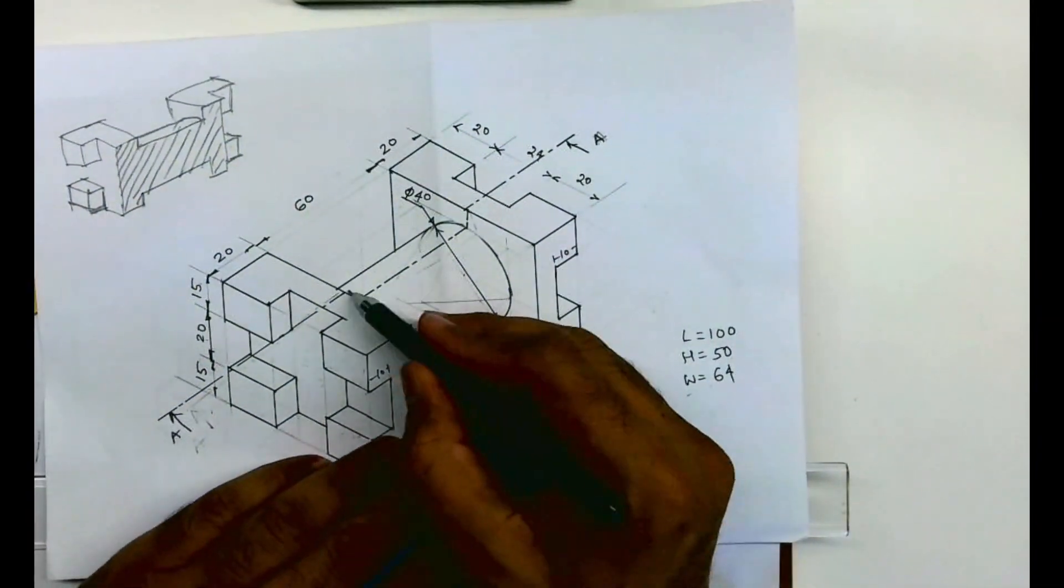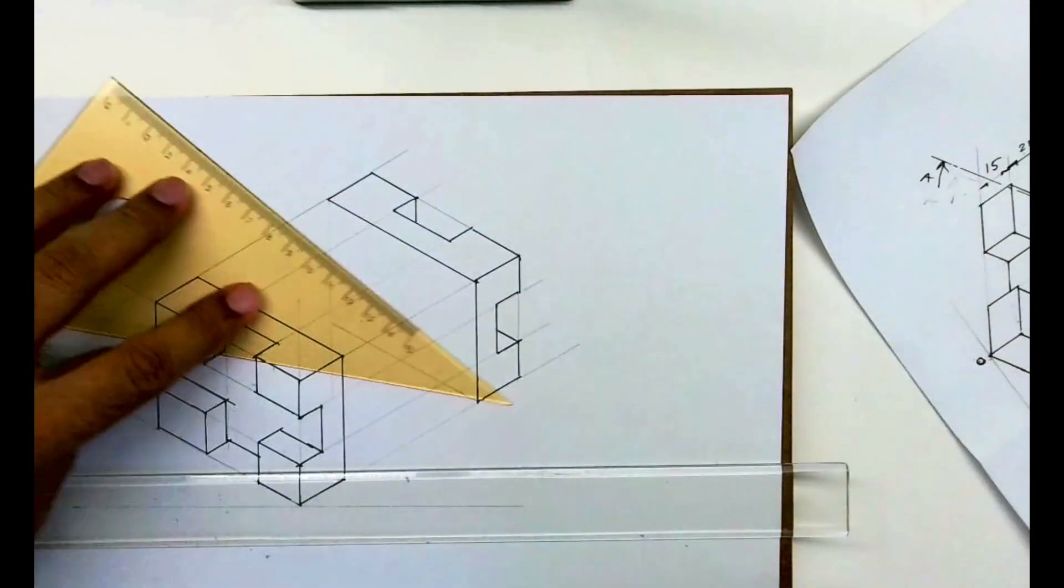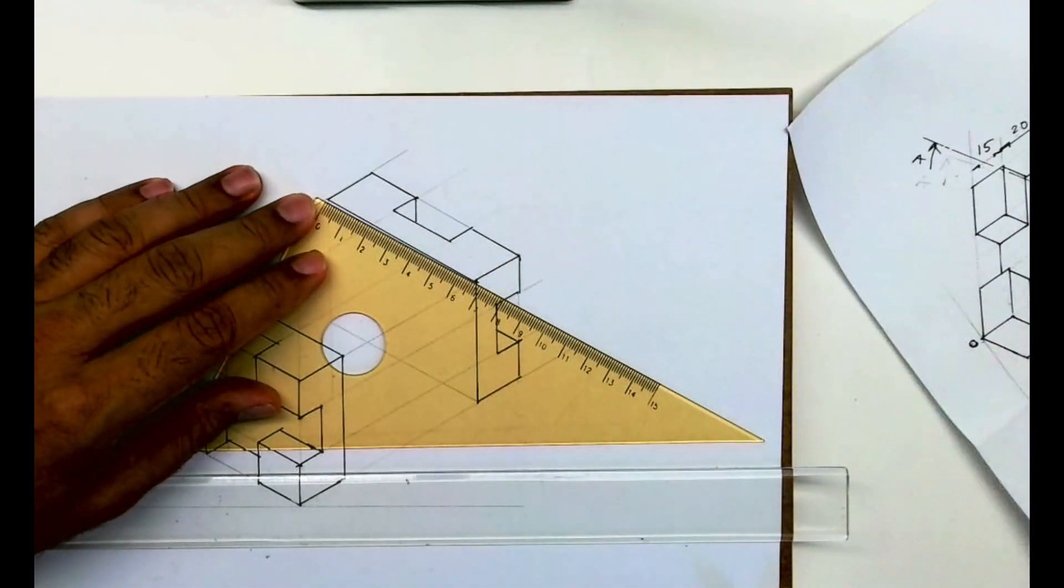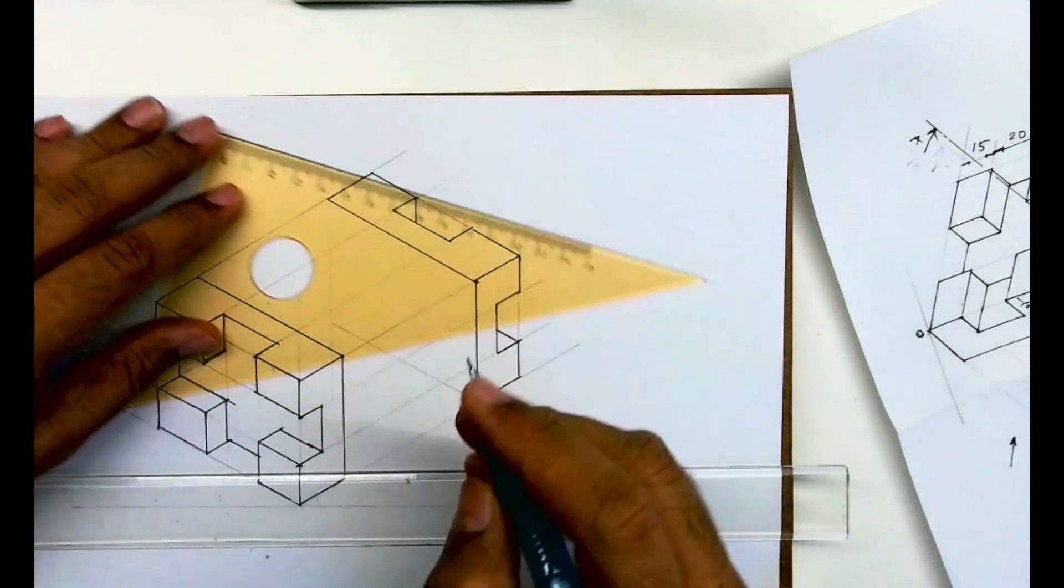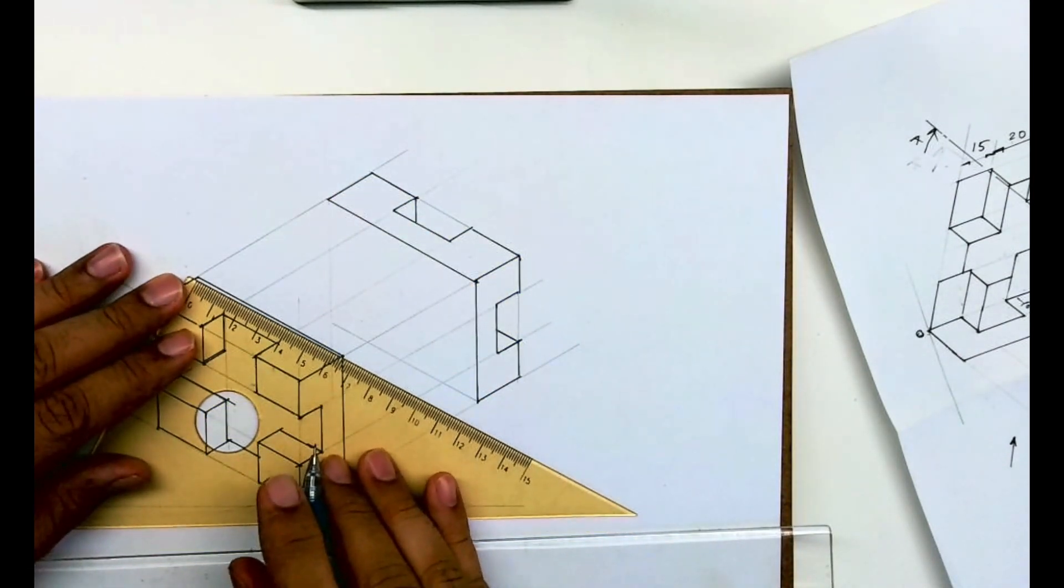What I need to do is find the center and draw with four-center method to draw a circle. I'll take the midpoint which is, this is 64 right, so 32.